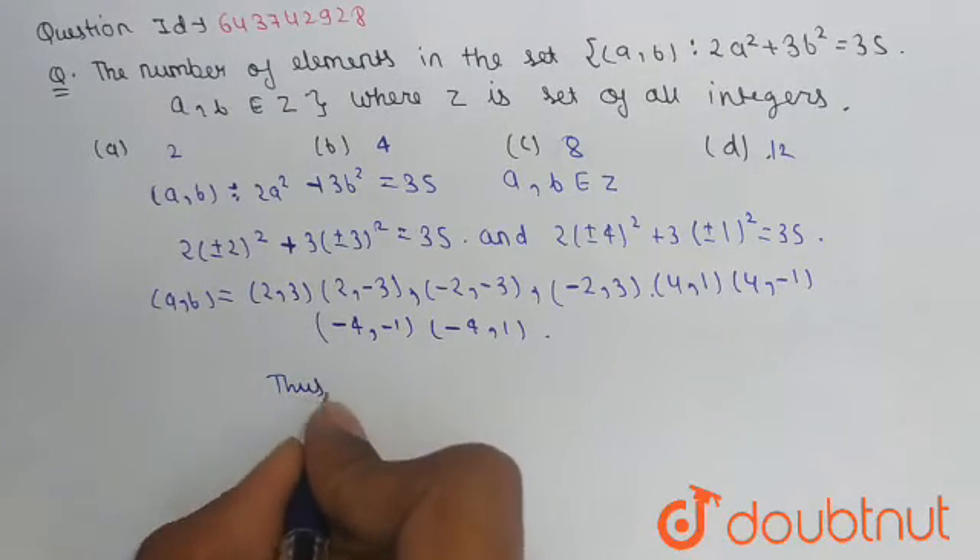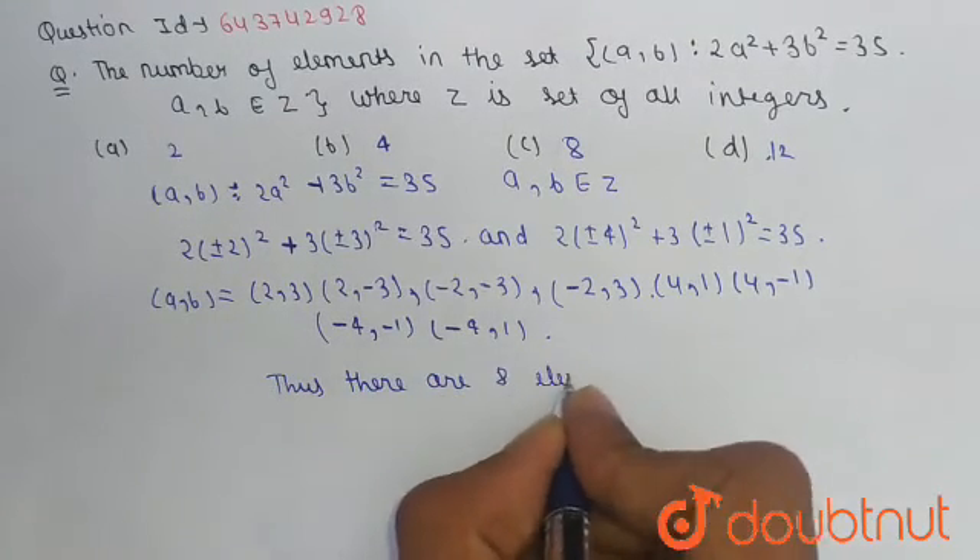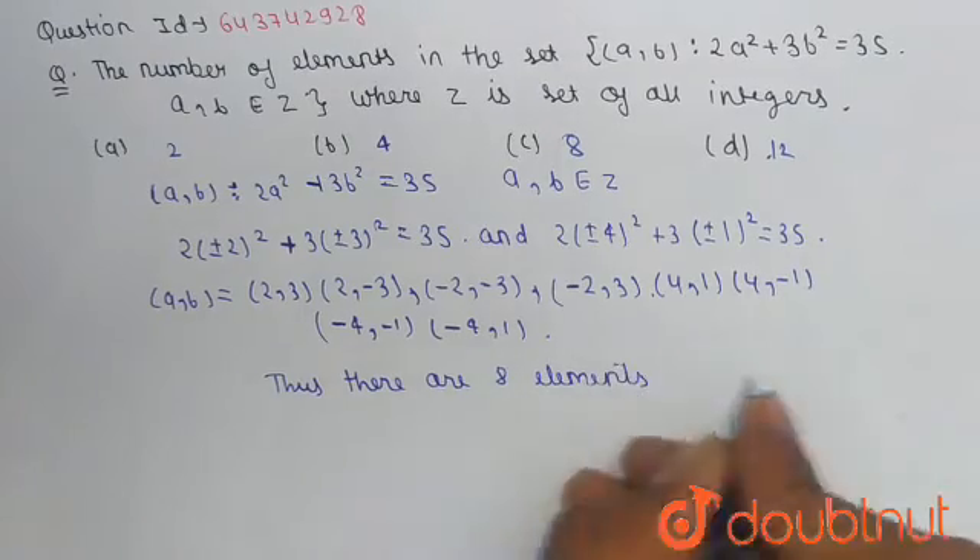(-4,1) and (-4,-1). There are eight elements, so the answer to this question is option C, which is eight.